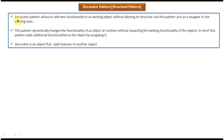Decorator Pattern allows to add new functionality to an existing object without altering its structure, and this pattern acts as a wrapper to the existing class. This pattern dynamically changes the functionality of an object at runtime without impacting the existing functionality of the objects. In short, this pattern adds additional functionality to the object by wrapping it.